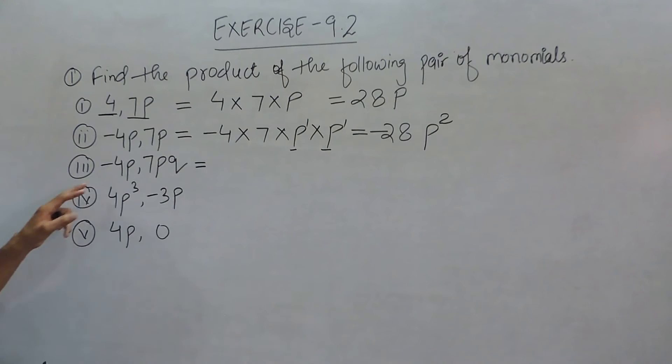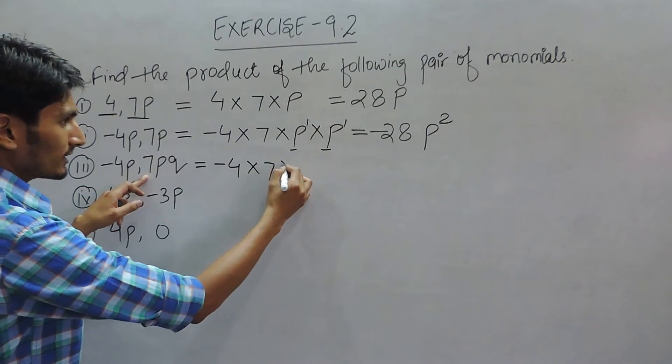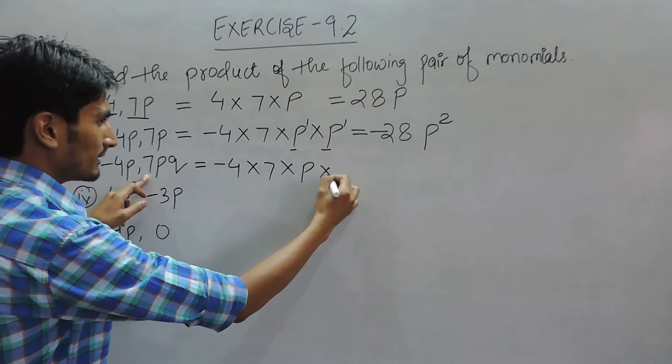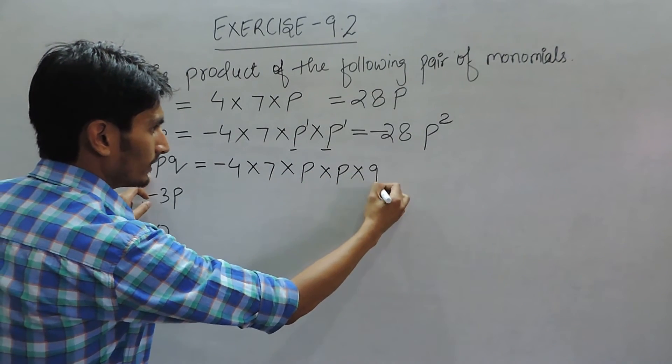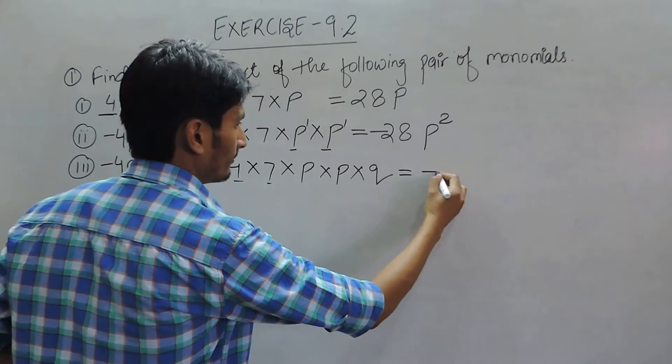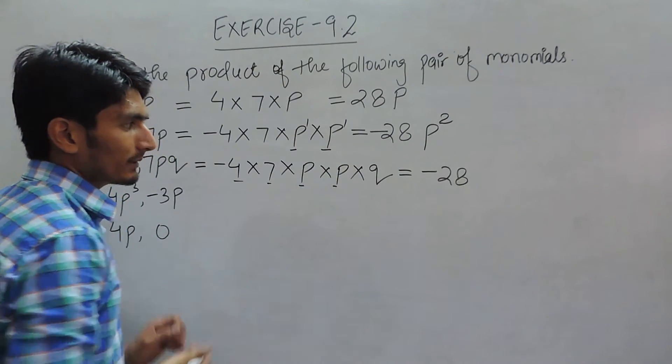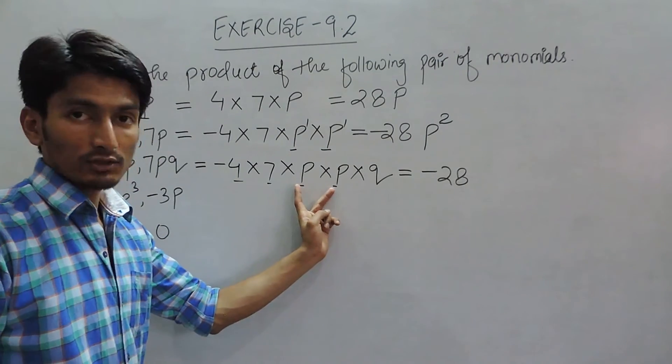Same case with this. This is 4 multiplied by 7, multiplied by P, multiplied by P, multiplied by Q. So again these can be multiplied. It will give -28. When this and this is multiplied, one thing is also important...